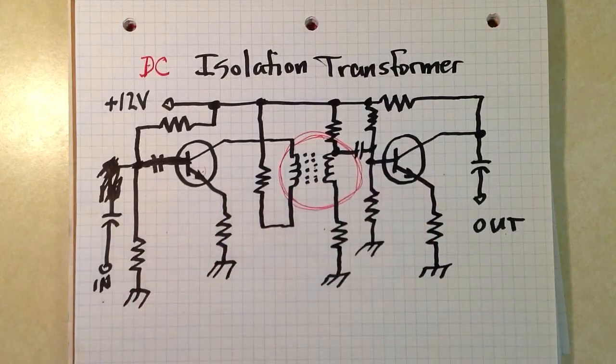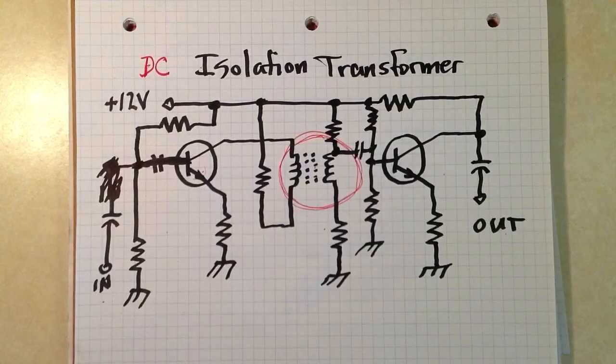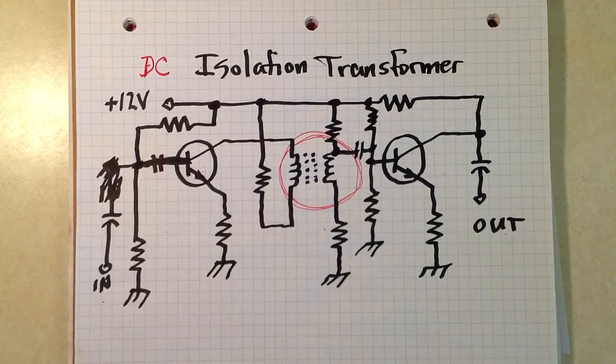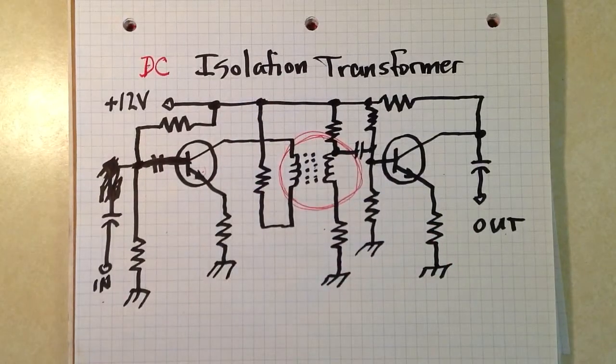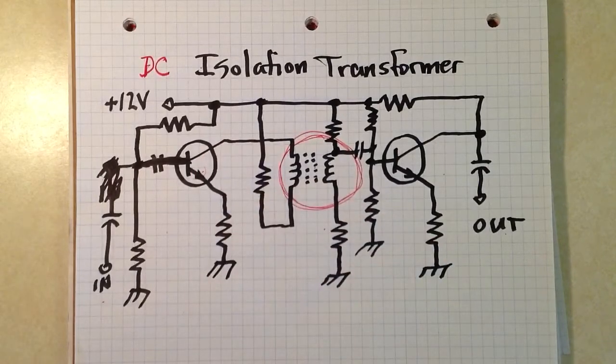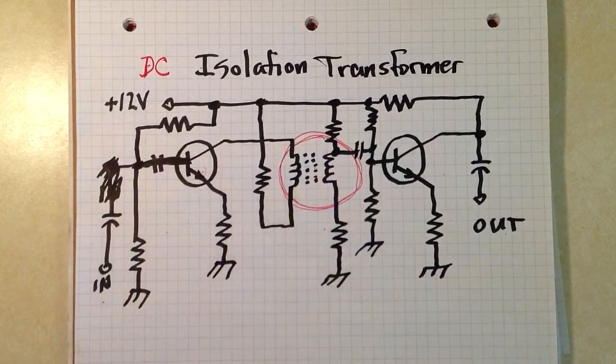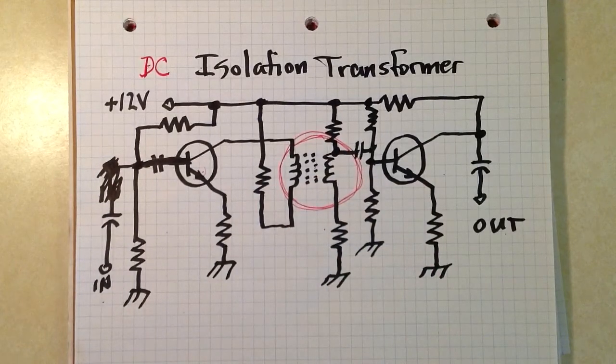And it also allows for an impedance transfer ratio that can be very precisely set as you wish. This will also work with radio frequency circuits. And there you go. That's what an isolation transformer basically is. So when you go to your Radio Shack store and find an audio isolation transformer, it's probably something like what you see right here in the application.